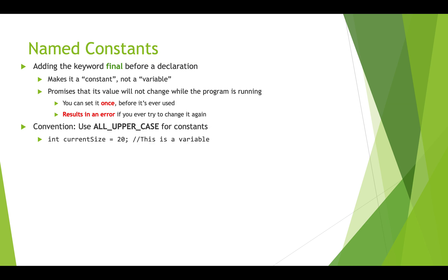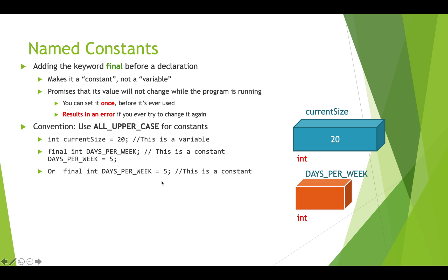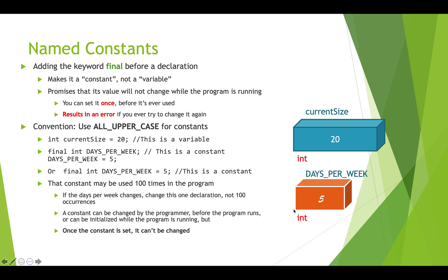Here's a variable: `int currentSize = 20`. We've got a box in memory, a type, a name, and a value. Constants look very similar but we have the `final` keyword. They can be declared in similar ways — you can declare it and then assign a value on the next line, or do it all in one line. For example: `final int DAYS_PER_WEEK = 5`. Once five is in this box, we cannot change it while the program is running. The constant might be used 100 times, but if we decide the days per week is four, the programmer changes it once at the declaration — it can't change in the middle of execution.